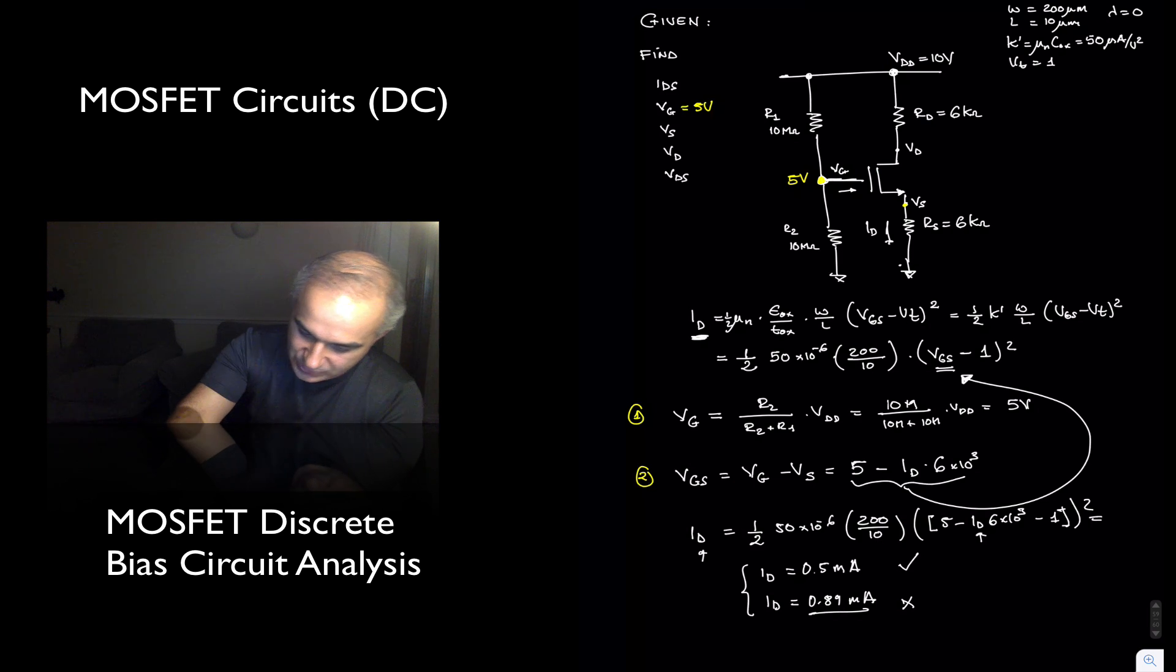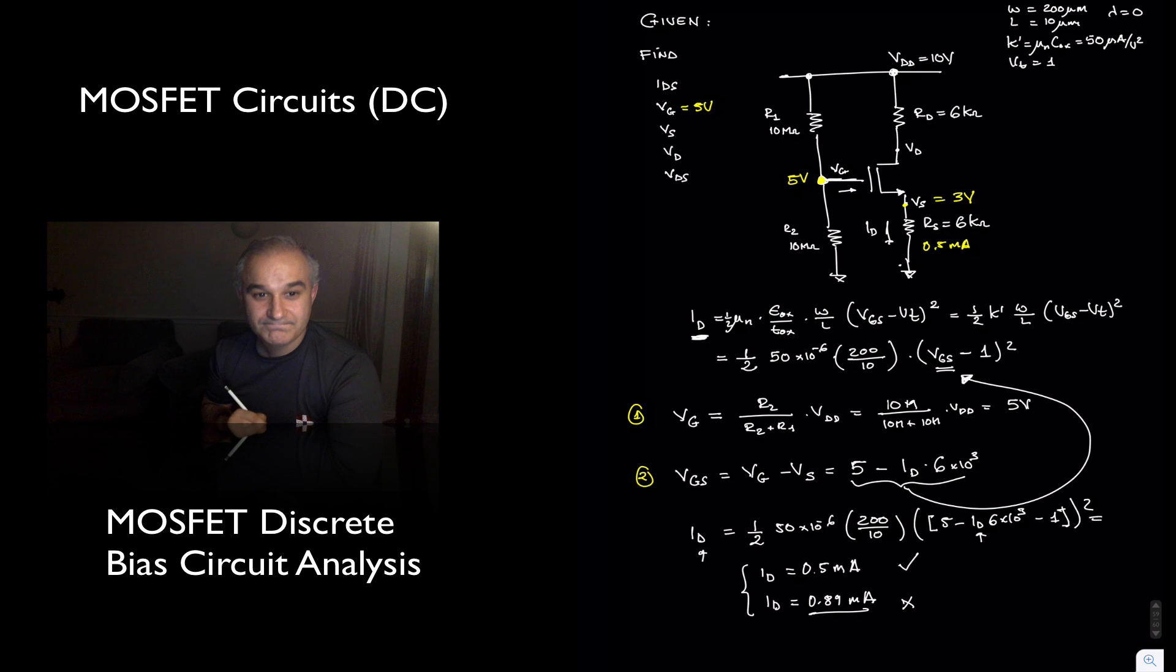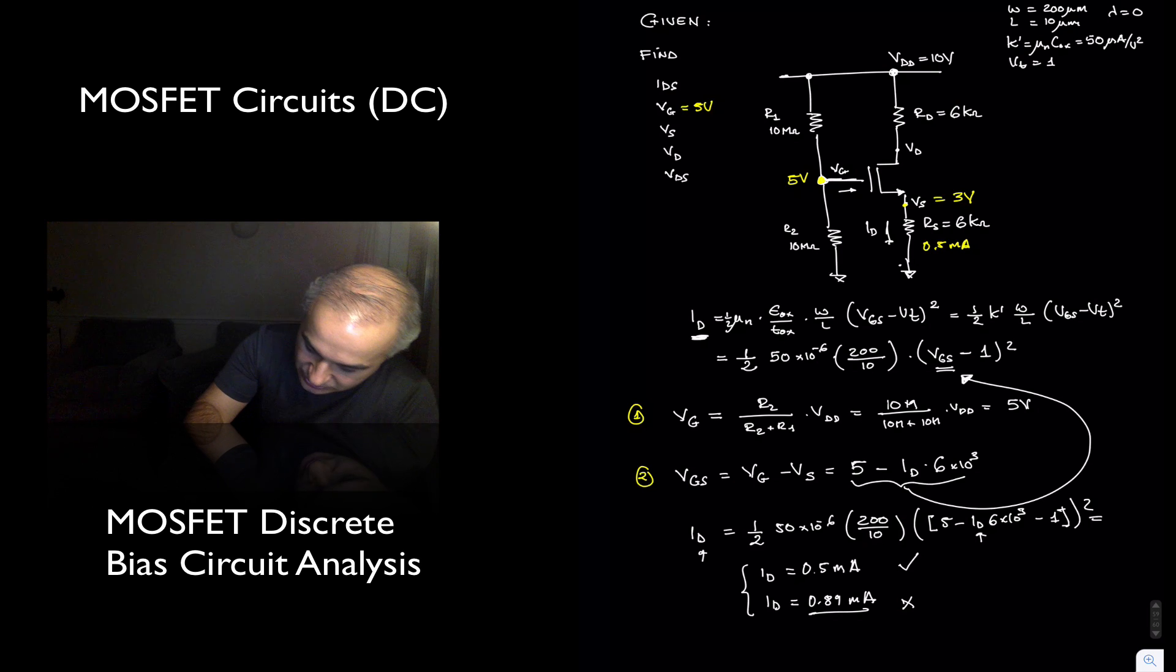And once we have that this is 0.5 milliamps, now we can find everything. So 0.5 milliamps times 6k tells you that this is 3 volts.